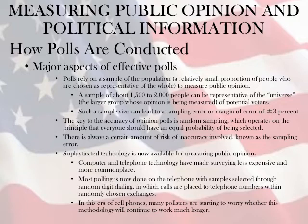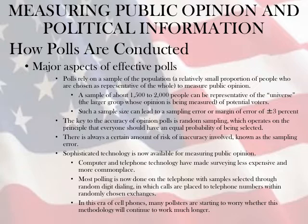What are the major aspects of effective polling? Polls rely on a sample of the population — a relatively small proportion of people chosen as representatives of the whole to measure public opinion. A sample of about 1,500 to 2,000 people can be representative of the universe, or the larger group whose opinion is being measured, of potential voters. Such a sample size can lead to a sampling error or margin of error anywhere from plus 3% to minus 3%. The key to the accuracy of opinion polls is random sampling, which operates on the principle that everyone should have an equal probability of being selected. There is also a certain amount of risk in inaccuracy, known as the sampling error.